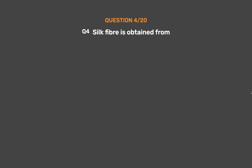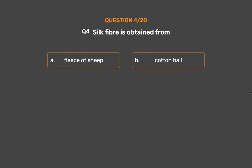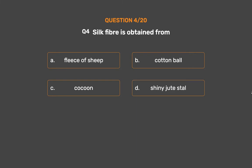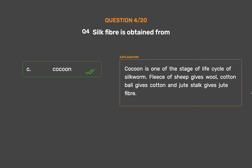Question No. 4. Silk fiber is obtained from — Option A: Fleece of sheep, Option B: Cotton ball, Option C: Cocoon, Option D: Shiny jute style. The correct answer is Option C: Cocoon. Cocoon is one of the stages of the life cycle of the silkworm. Fleece of sheep gives wool, cotton ball gives cotton, and jute stock gives jute fiber.